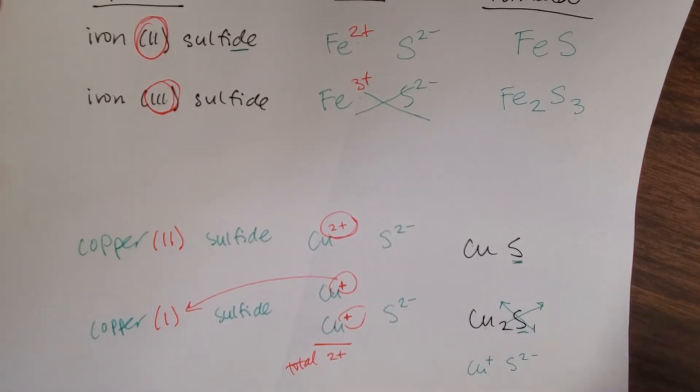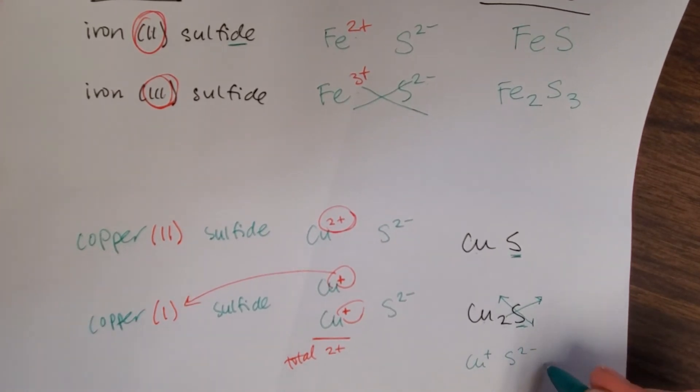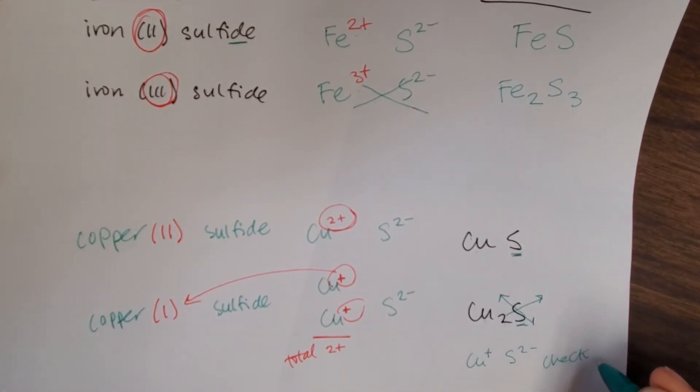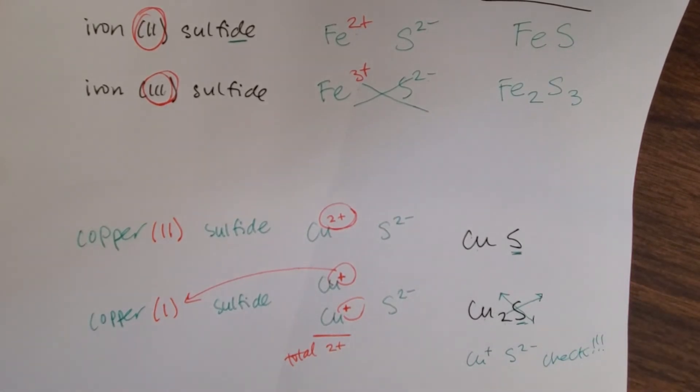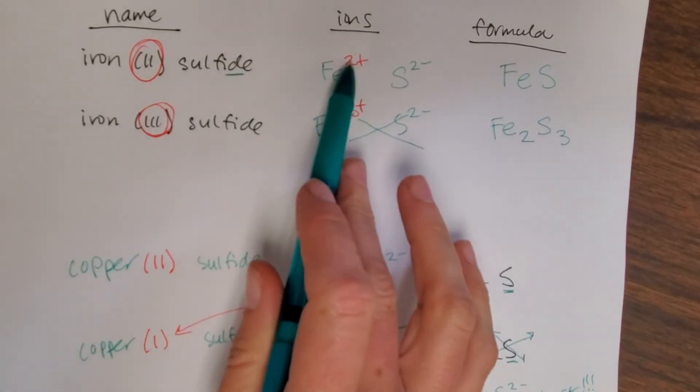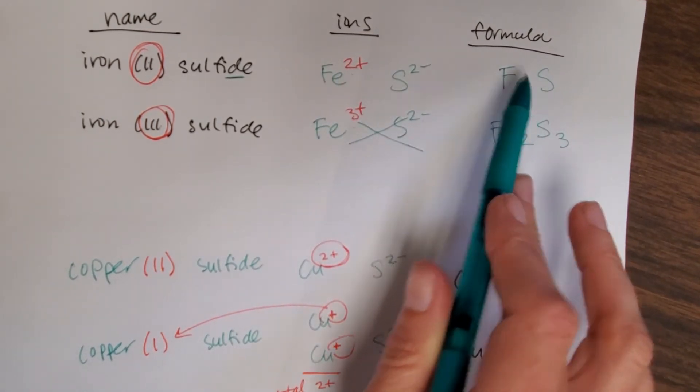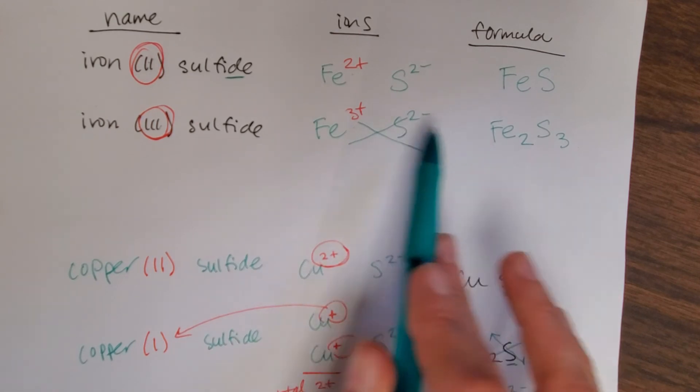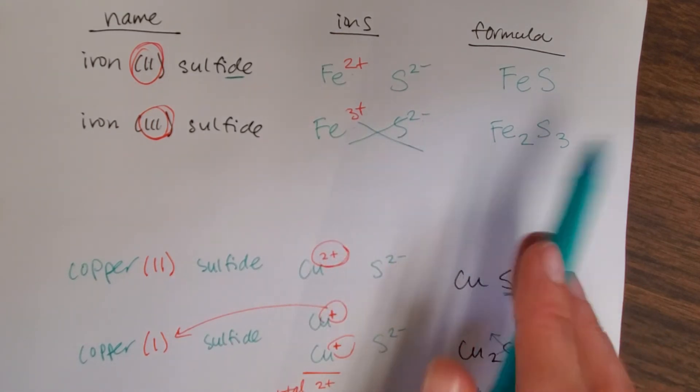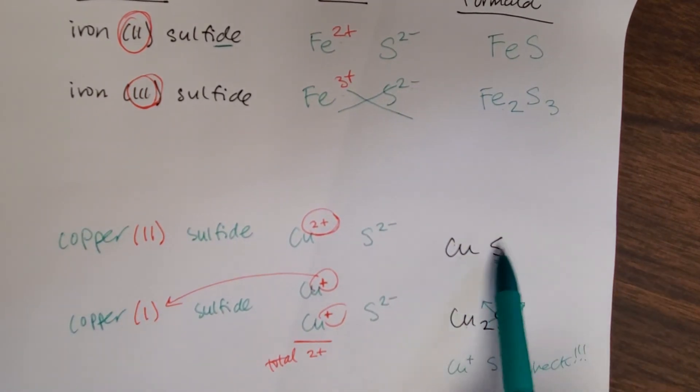But you always have to check this with the periodic table. So you can see that iron(II) tells me the charge and then I work with those ions to get the formula. Iron(III) tells me the charge, work with those ions to get the formula.